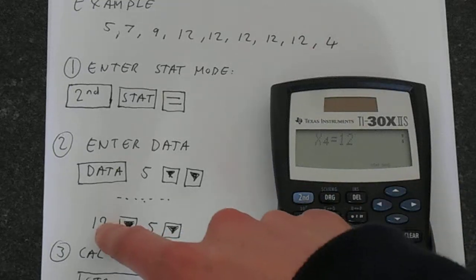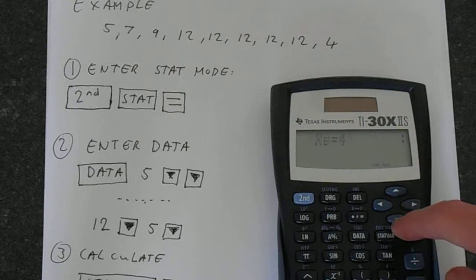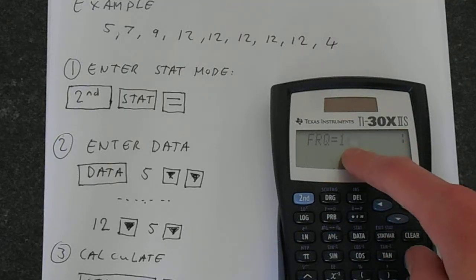Then to enter the 12, we're doing 12. I'll show you that again. 12, then down, put in the frequency as five, down. The last number we've got is four, and then we've got a frequency of one.